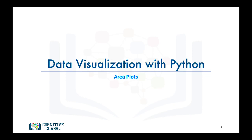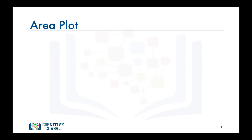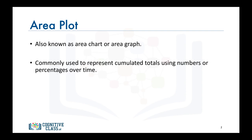In this video, we will learn about another visualization tool: the area plot, which is actually an extension of the line plot that we learned about in an earlier video. An area plot, also known as an area chart or graph, is a type of plot that depicts accumulated totals using numbers or percentages over time. It is based on the line plot and is commonly used when trying to compare two or more quantities.